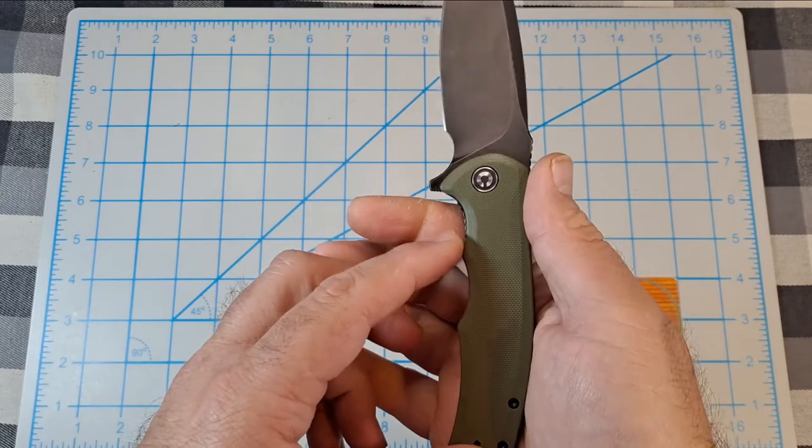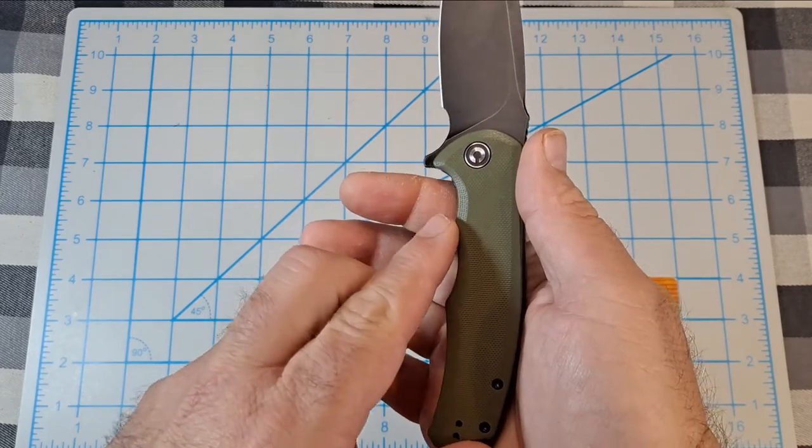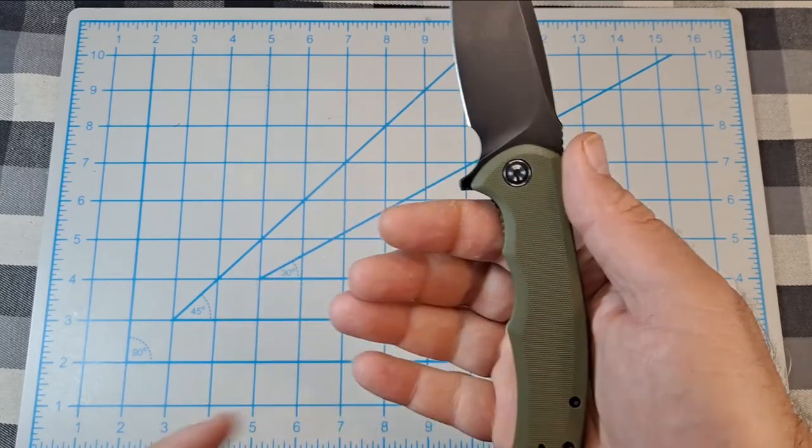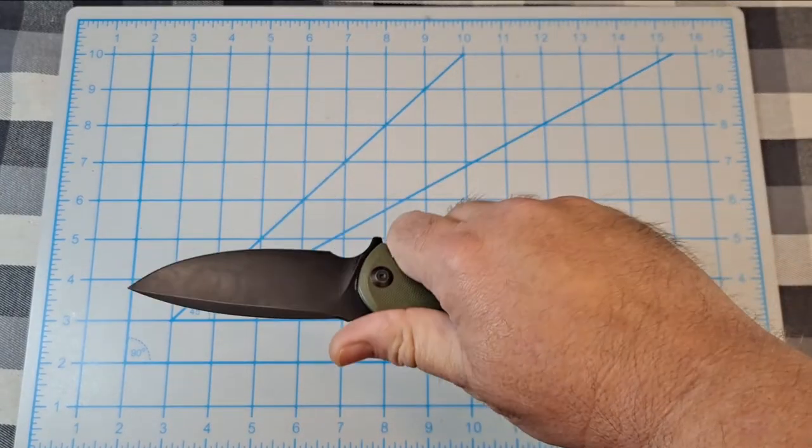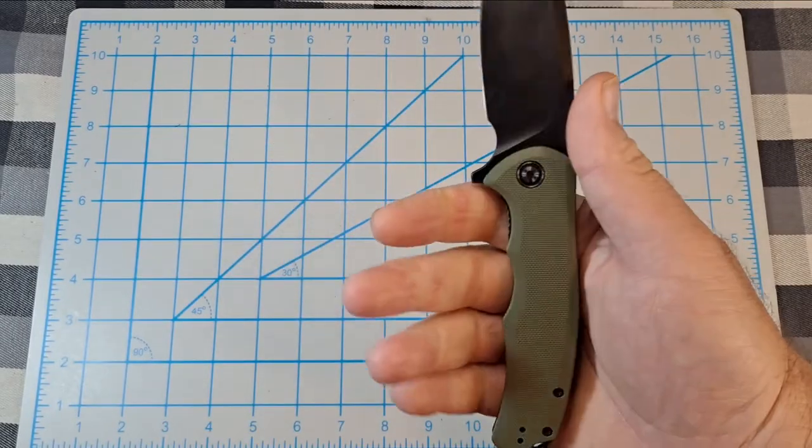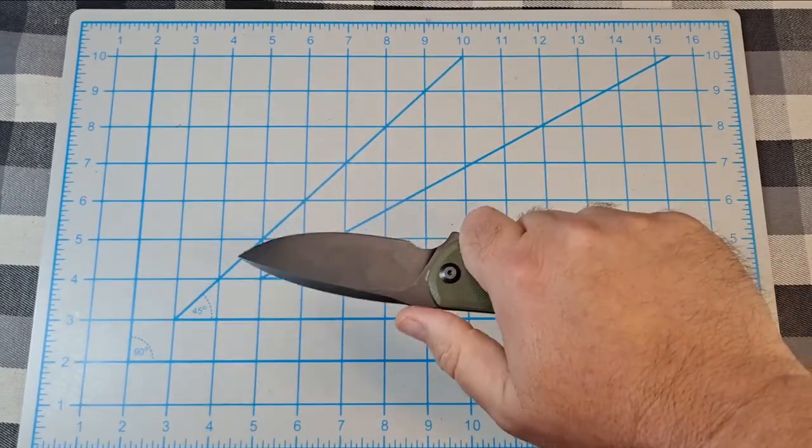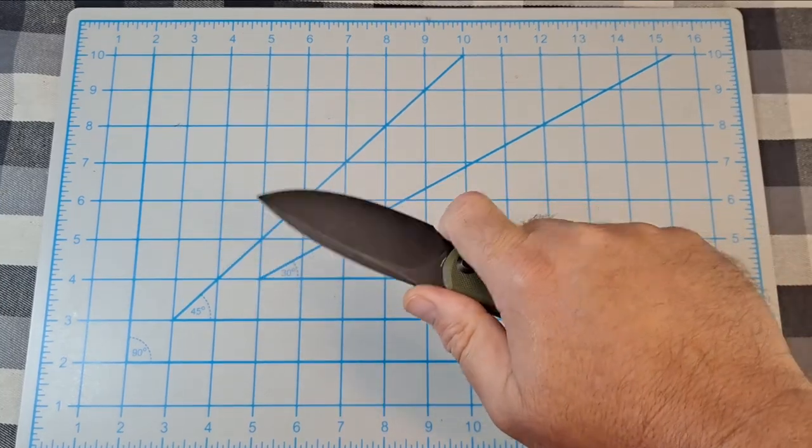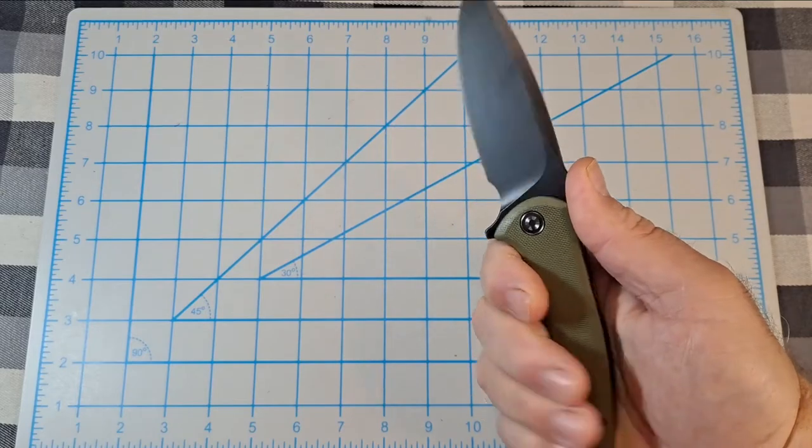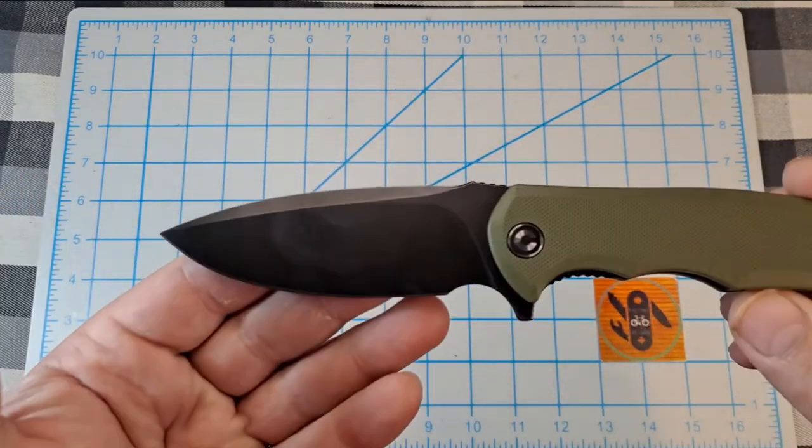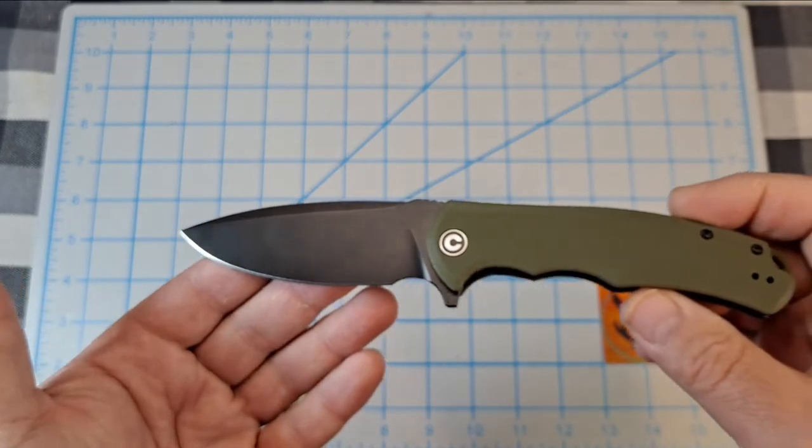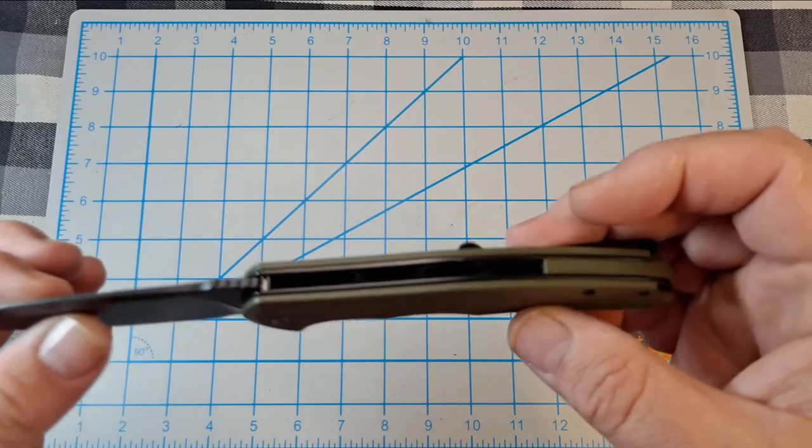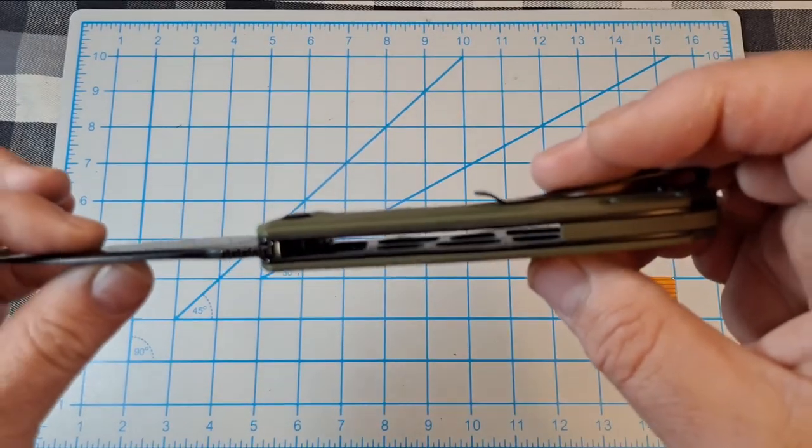This right here, like I prefer kind of a straighter handle. The front choil here is okay, but it fits my hand. My fingers fall right in those spots, nice, no issues. Good finger choil to choke up on.